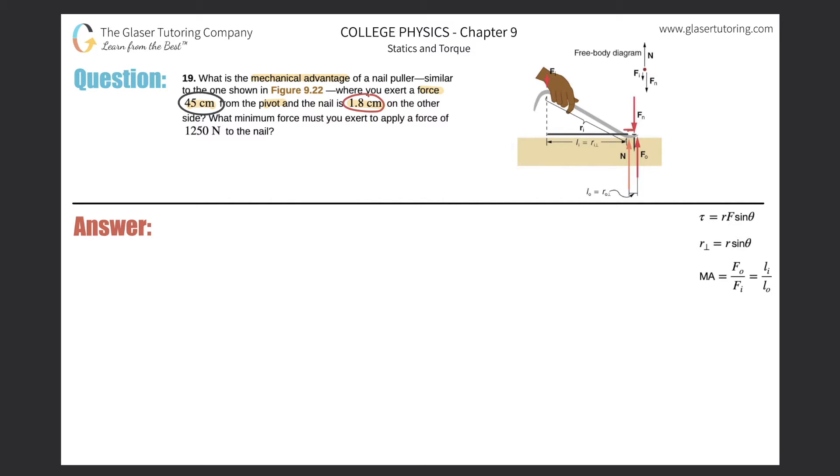We have to find the mechanical advantage. Let's take a look at the formula on the right-hand side. It says that the mechanical advantage is equal to either the output force divided by the input force, or the input lever arm divided by the output lever arm. The input is the force being inputted into the system, and the output is the force on the other side of the pivot point pulling out the nail.